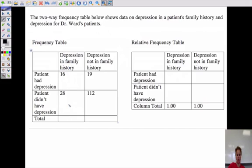So here we're adding the totals. How many people had depression in their family history? Well, that would be 16 plus 28 is 44. People that didn't would be 19 plus 112 is 131. So then 16 divided by 44, that's going to be 0.36. 28 divided by 44, that's going to be 0.64. 19 divided by 131 is going to be 0.145. And 112 divided by 131 is going to be 0.855. Both of those adding up to 1.